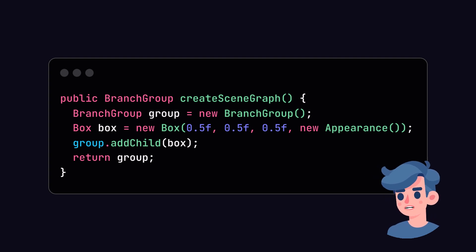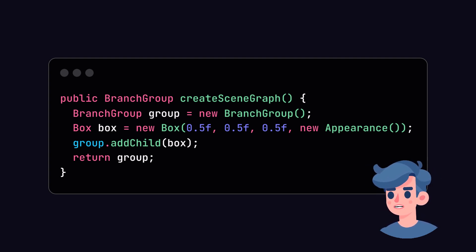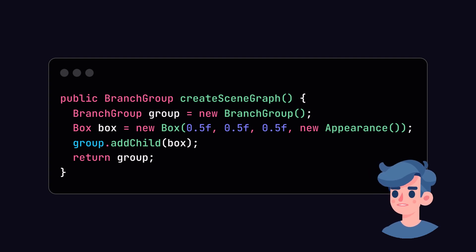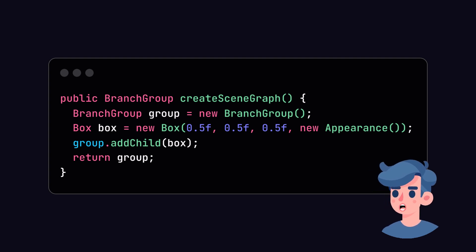In the next step, let's add geometric shapes to our scene, starting with a simple box. We can use the Box class from Java 3D, which makes things much easier. Here's how you create a Box and add it to the BranchGroup — by doing this you'll be able to see a 3D box in your Java application.